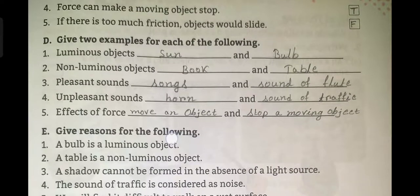Next, give two examples. Luminous object: sun and bulb. Non-luminous object: book and table. Pleasant sound: songs and sound of a flute. Unpleasant sound: horn and sound of traffic. Effects of force: move an object, stop a moving object.